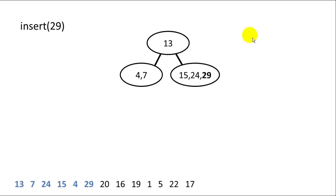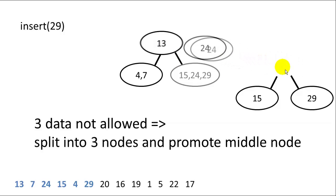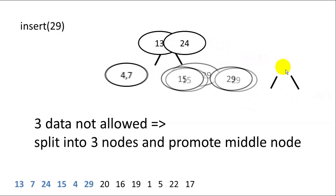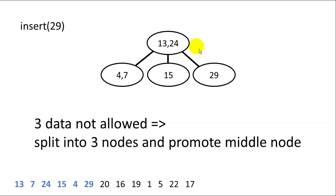Next we insert 29. It's greater than 13, so it goes in the right child, but now we have 3 items there, so we need to split. We promote the middle value, 24, to the parent. We get a new subtree with 24, 15, and 29. We add 24 to the parent node 13, and reattach the children. Now the 29 has been successfully inserted and we have a new tree with 4 nodes.